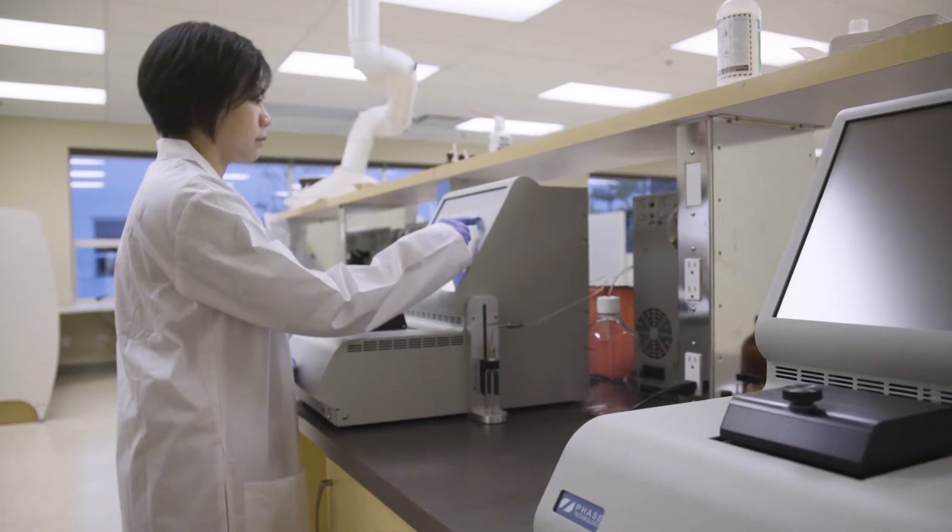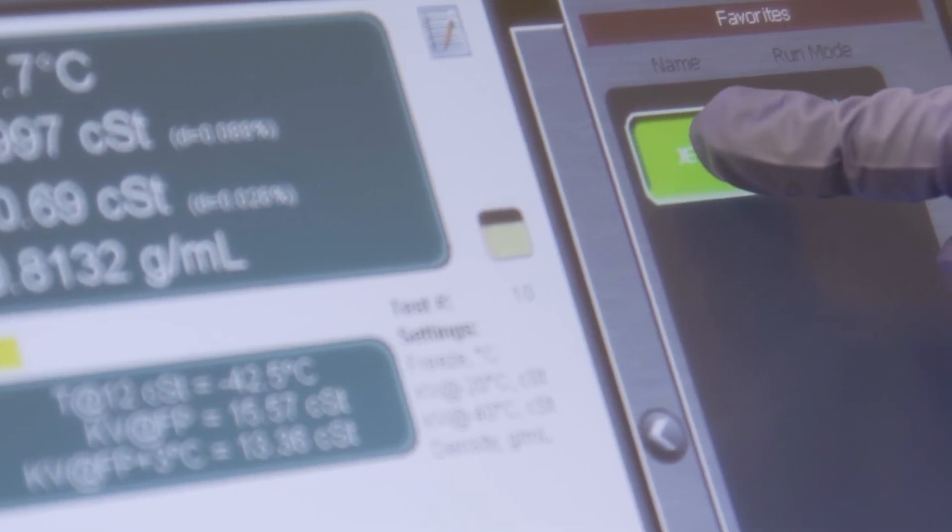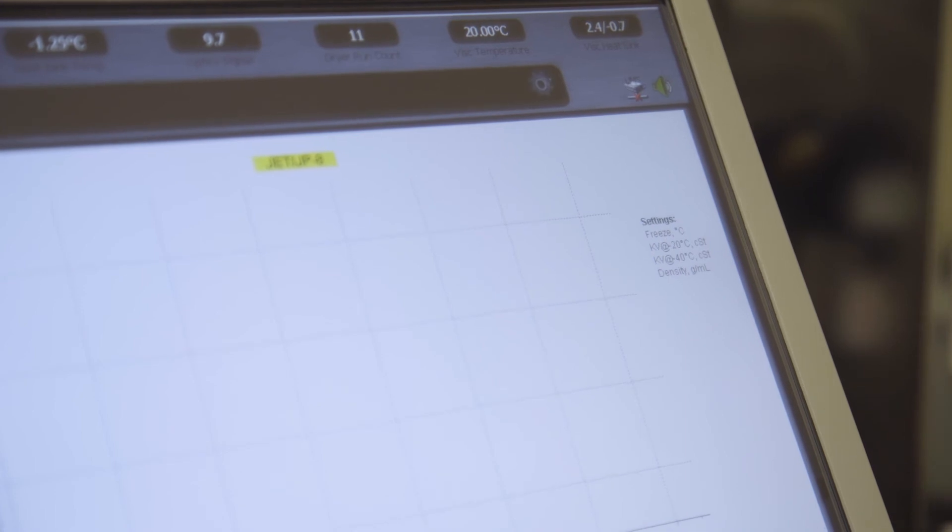To start a run using a predefined test setting, press and hold one of the favorites buttons for two seconds.